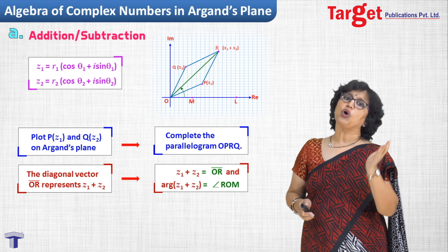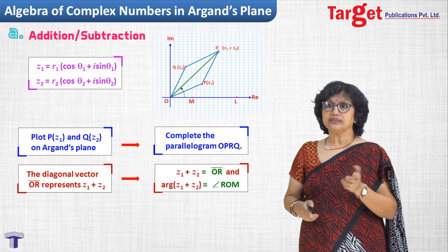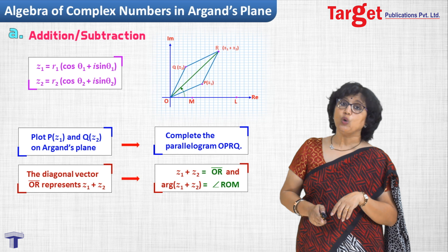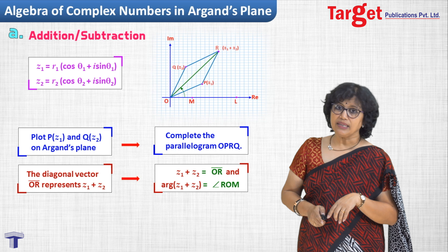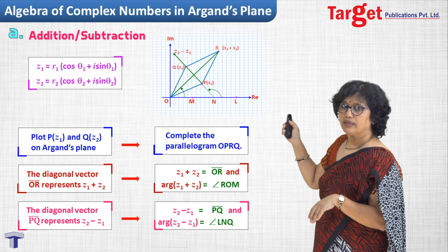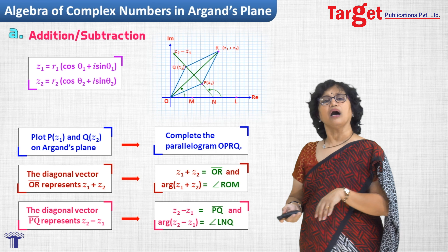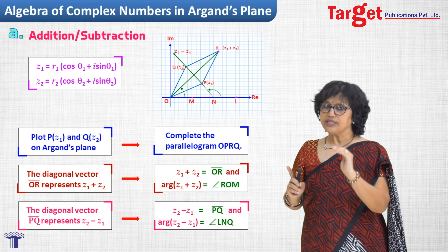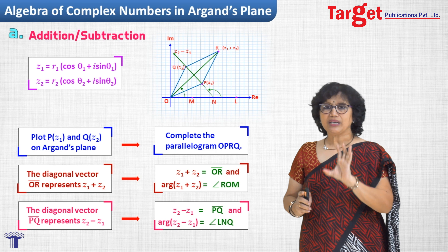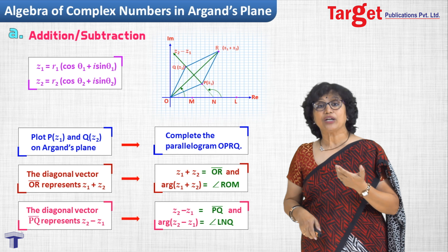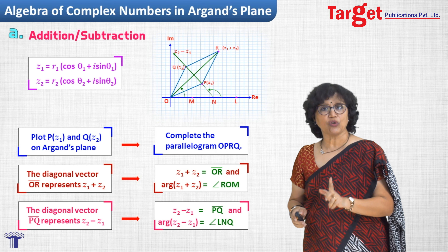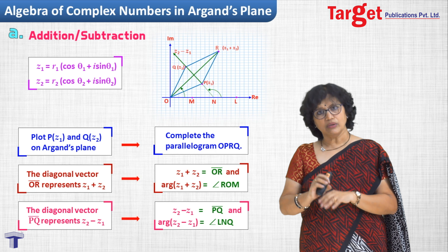For subtraction, using your knowledge of vectors: vector PQ represents z2 minus z1, and vector QP represents z1 minus z2. The corresponding argument is angle LNQ in the figure. So both the sum and difference of two complex numbers can be shown on the Argand plane. Since you are doing this for the first time, keep revising. A geometrical approach to complex number problems is extremely helpful, especially for competitive examinations.